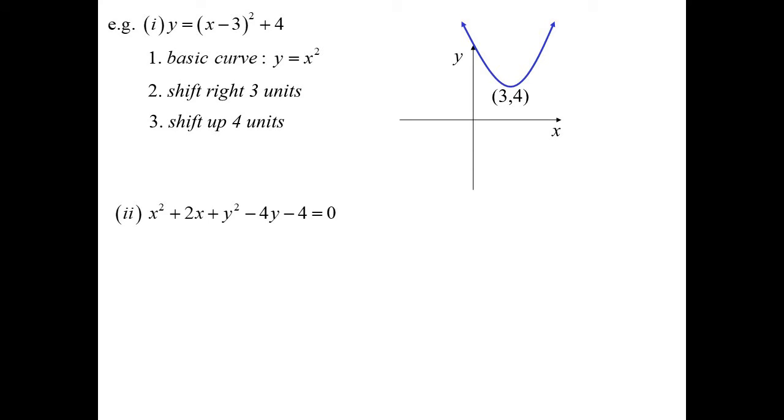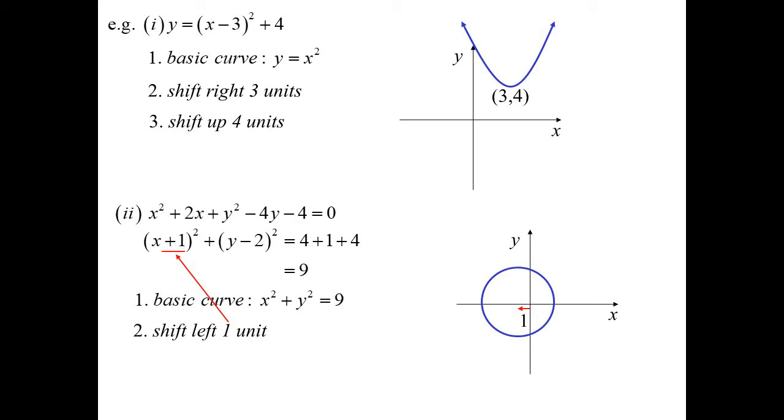This one, going to have to complete the square first to work out what shifting's happening. So half the coefficient of x would be one, half the coefficient of y is negative two, and completing the square we get nine on the other side. So we now know we have a circle of radius three units. The horizontal shift would be left one unit. And here's a good example why we do put y minus, is in this sort of one. So we have y minus two. That tells me we're shifting up two units. So the center of the circle is one, two, the radius is three.